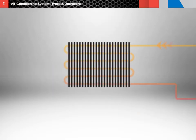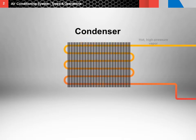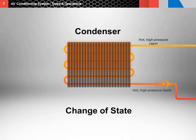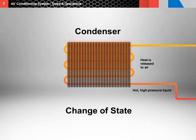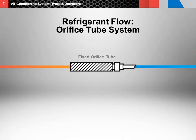As it enters and flows through the condenser, it changes from a hot, high pressure vapor to a hot, high pressure liquid. This change of state allows the refrigerant to condense from a vapor to liquid, releasing heat energy to the ambient air. The refrigerant next flows from the outlet of the condenser as a hot, high pressure liquid into the inlet of the orifice tube.